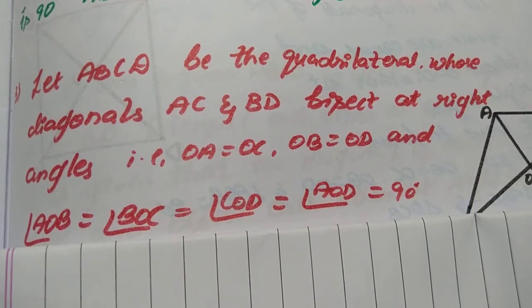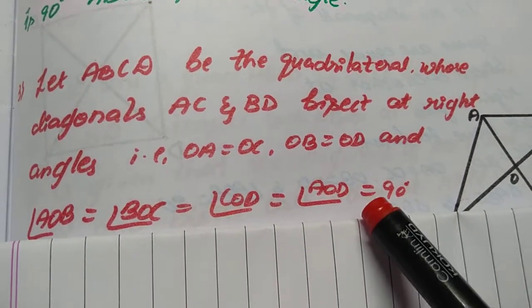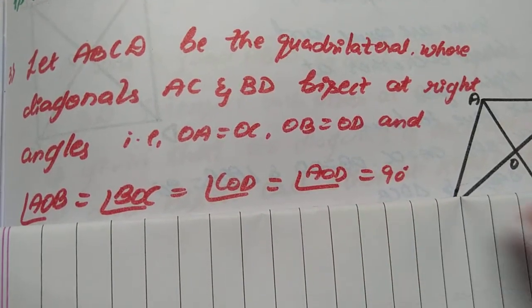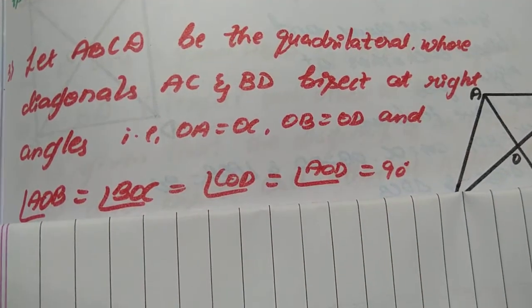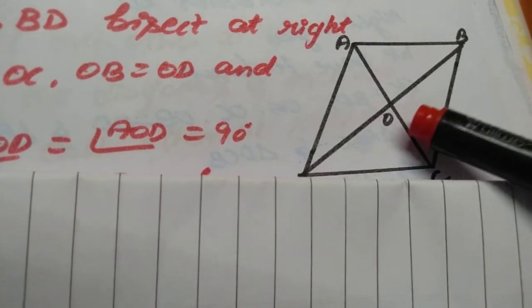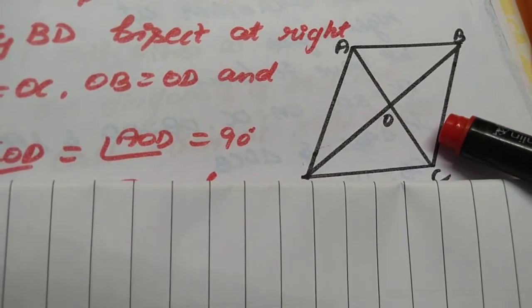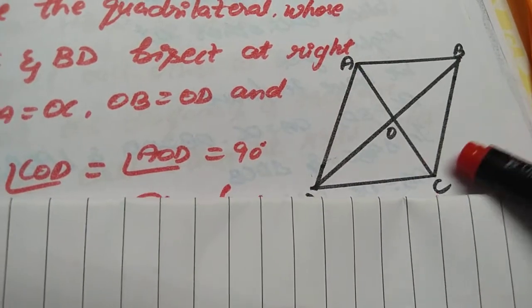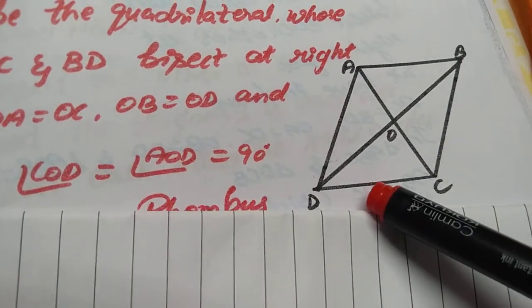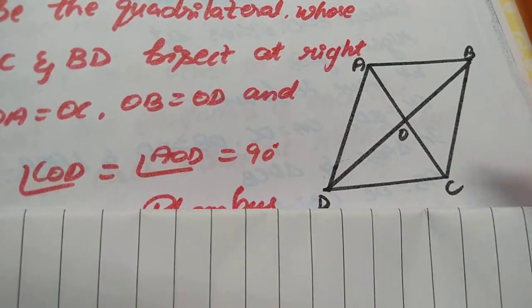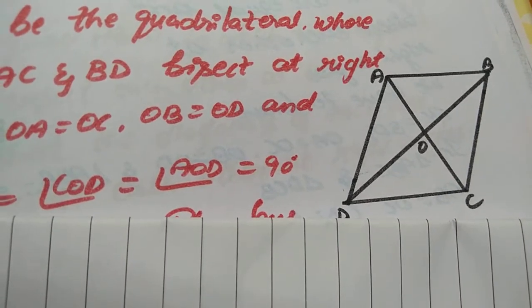That is what I have written here. What I have explained, I have written here. Now, in order to prove this quadrilateral is a rhombus, first I have to prove this quadrilateral is a parallelogram with all the sides equal. Let us move on to the sum.